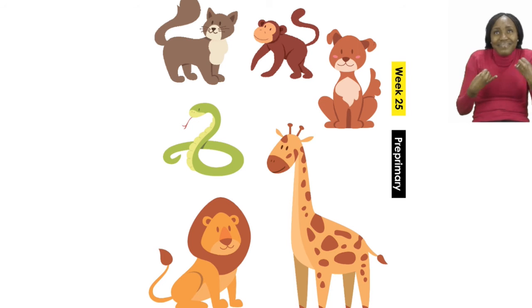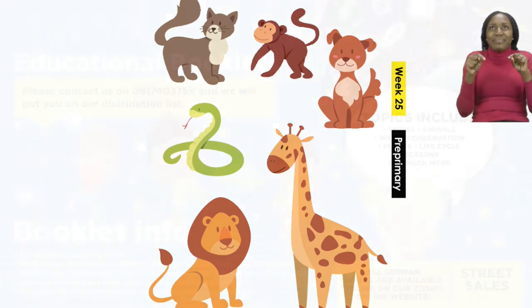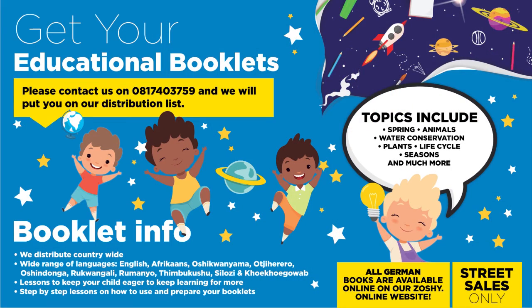We will be back after this short break. Do you have children in the age range of five to six years and want to participate in our school booklet program? Please contact us on 081 743 759 and we will put you on our distribution list. Topics include family, summer, culture, traditions and houses, transport and communications, occupations, autumn, and more. We distribute countrywide in over 10 different languages.